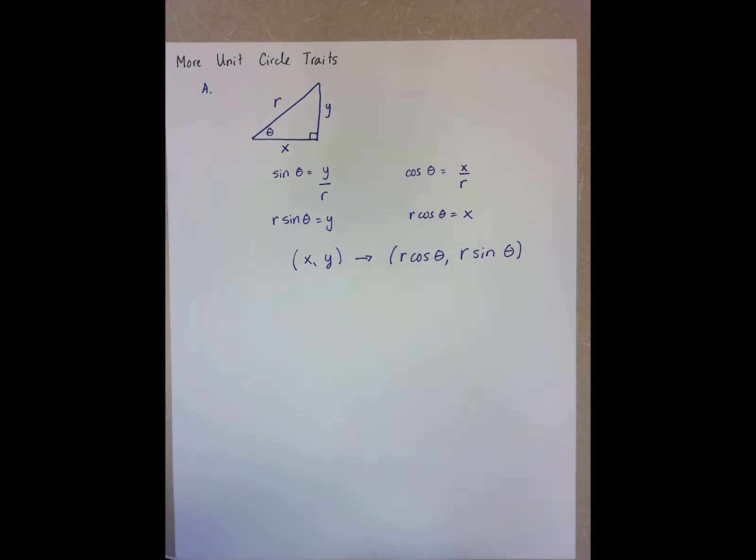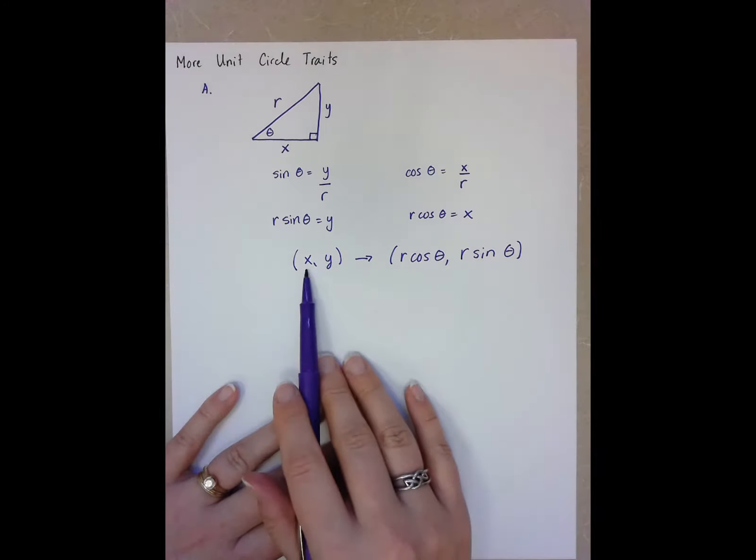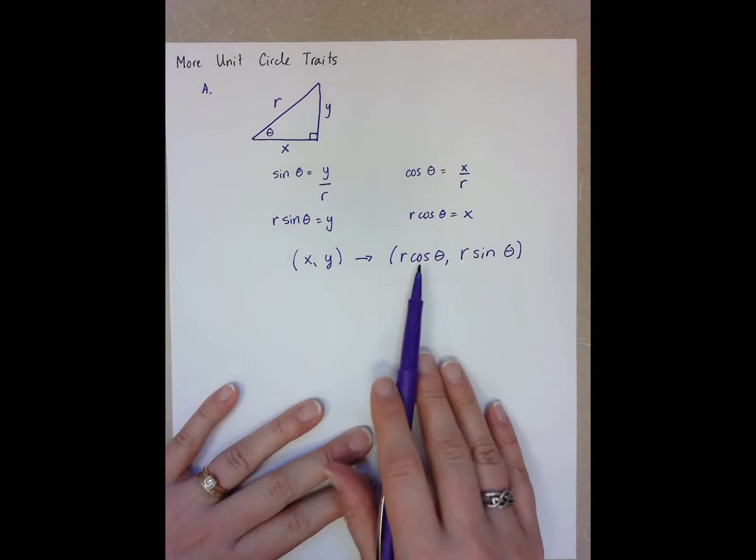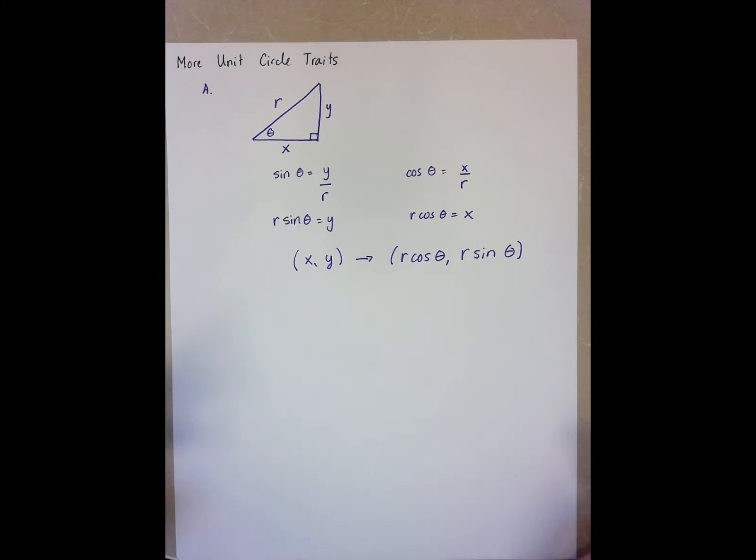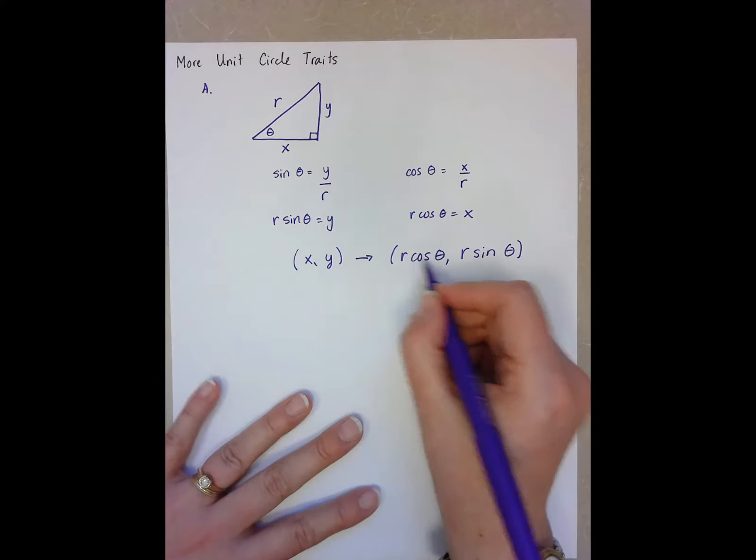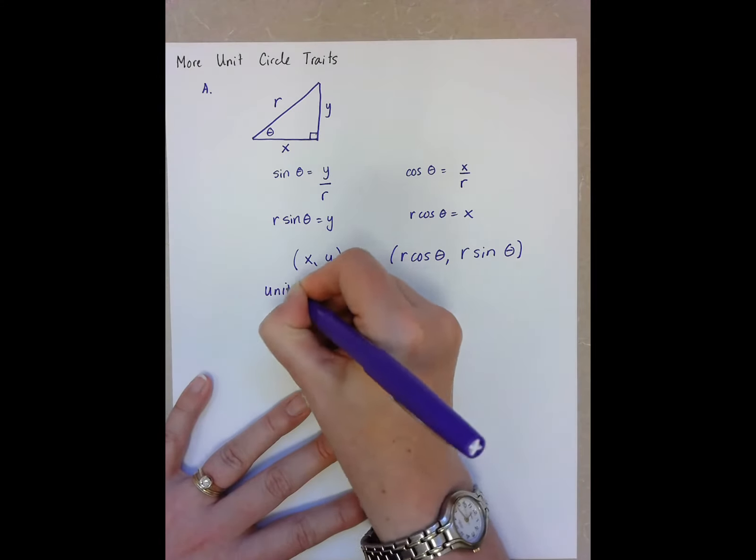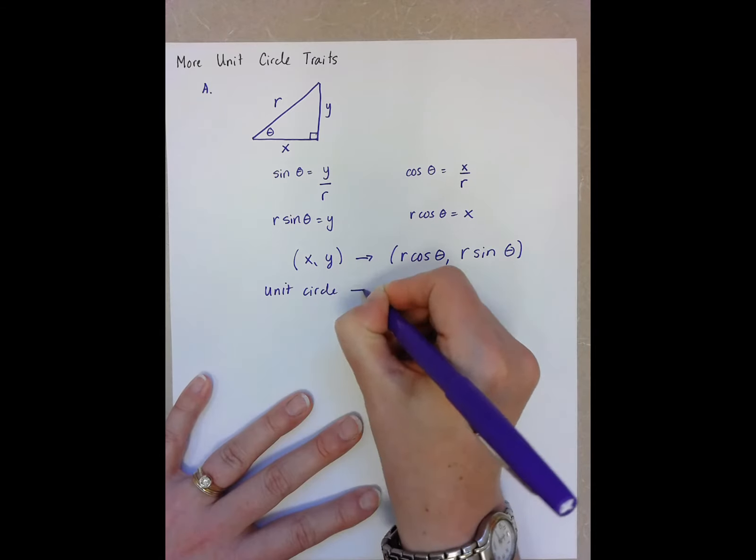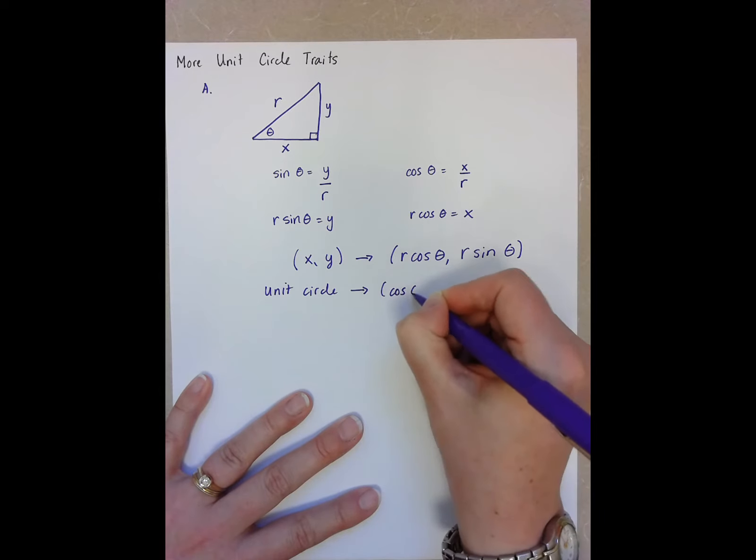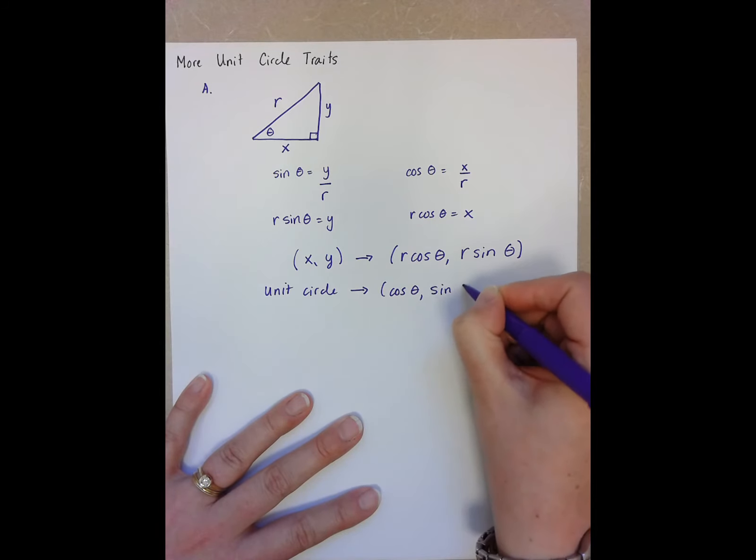One way that I remember this after I've derived this is just that alphabetically x comes before y, and alphabetically c comes before s. So when I'm doing my unit circle, my r becomes 1. So for the unit circle, this becomes cosine theta comma sine theta.